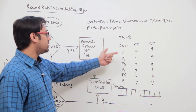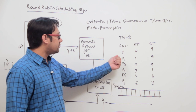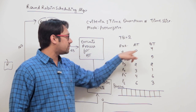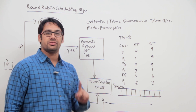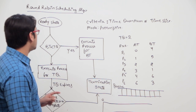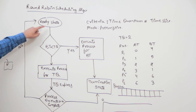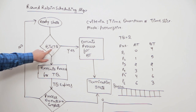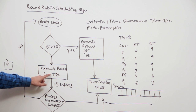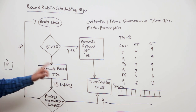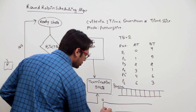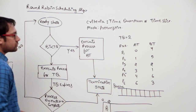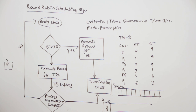At time 0, only one process is available, that is P1, and we will execute P1 for two units of time. The burst time of process P1 is 4, and the time quantum is 2. Since 4 is not less than 2, we follow this path and execute the process for the time quantum — that means we execute P1 for two units of time.